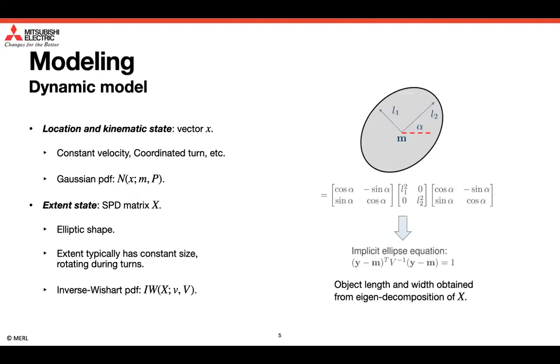We start by introducing the dynamic model used in this work. The location and kinematic state is represented as a vector. Common motion models include, for example, the constant velocity model and the coordinated turn model. The state density is Gaussian. As for the extended state, it is represented by symmetric positive definite matrix. This can be used to represent elliptical shape.